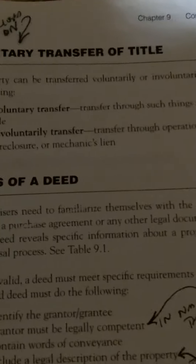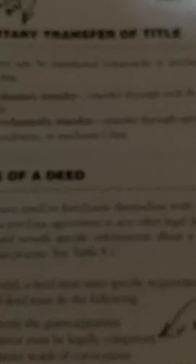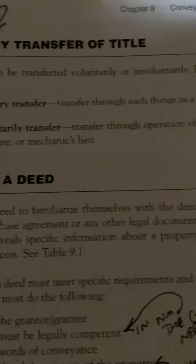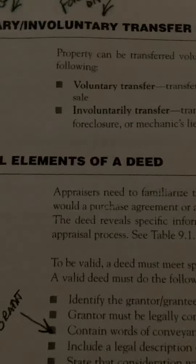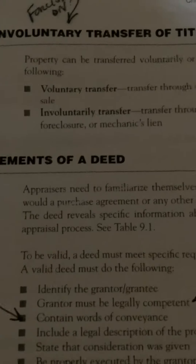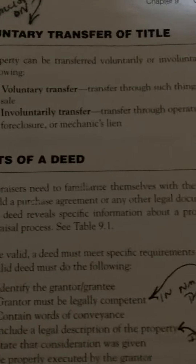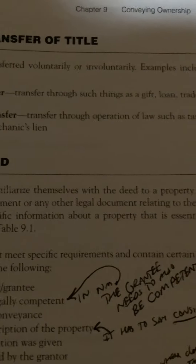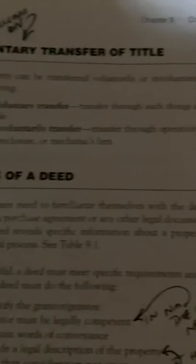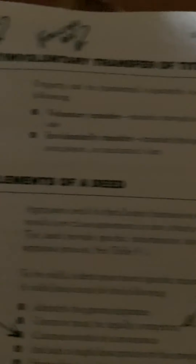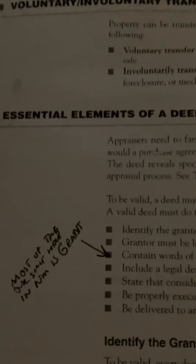Voluntary and involuntary transfer of title: property can be transferred voluntarily or involuntarily. Examples of voluntary transfer include transfer through such things as a gift, loan, trade, or sale. Examples of involuntary transfer include transfer through operation of law, such as tax sales, foreclosure, or mechanics liens.